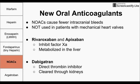Two of these NOAC drugs are rivaroxaban and apixaban. Both have an inhibitory effect on factor Xa, and they're both metabolized in the liver. We also have dabigatran, which directly inhibits thrombin. Unlike unfractionated heparin, which has an indirect effect on thrombin, dabigatran is a direct thrombin inhibitor, and it is cleared through the kidneys.